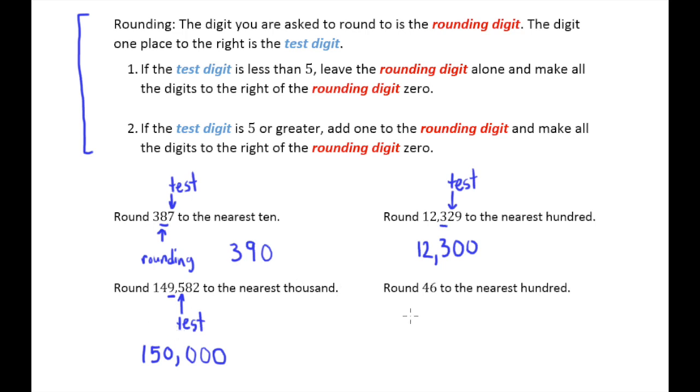Finally, we're going to round 46 to the nearest hundred. So we have four and six. This is a little funny. Let me rewrite 46 here. Six is in the ones place, four is in the tens place. This is a little bit odd. My rounding digit doesn't exist in this number. But I can see the test digit is four.